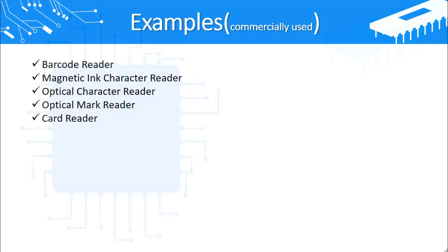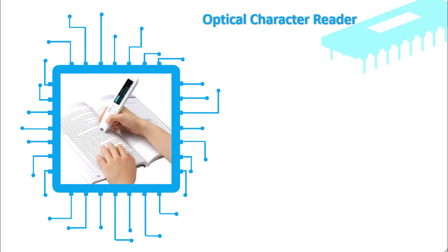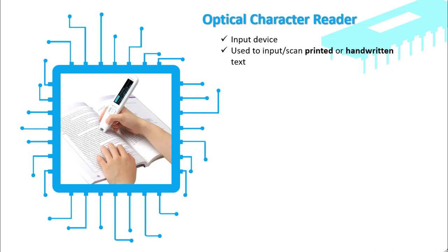Let's start our lesson with the first input device: the optical character reader. It is used to input printed or handwritten text into a computer.